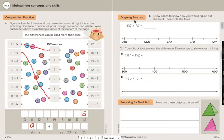Now I'm going to go over here. Ongoing practice number 1. It says draw jumps to show how you would figure out the total. Then write the total. I'm crossing out where it says draw jumps. You don't have to draw jumps. If you want to, you definitely can. But you can use whatever strategy you want to use to add 28 and 437. Okay?